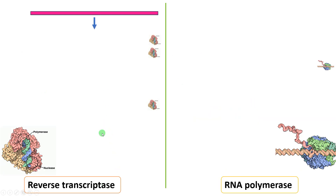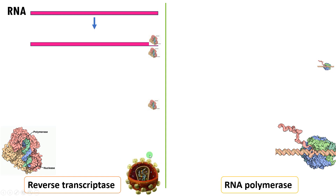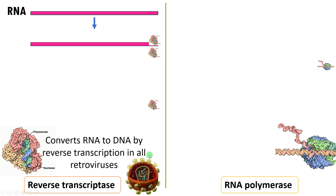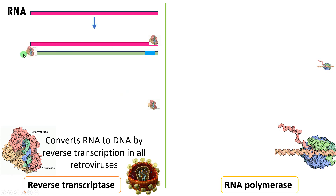Reverse transcriptase is the enzyme present in retroviruses like HIV, involved in the conversion of RNA to DNA by reverse transcription. This enzyme can use RNA as a template for the synthesis of cDNA — complementary DNA. So RNA is converted to DNA by reverse transcription.